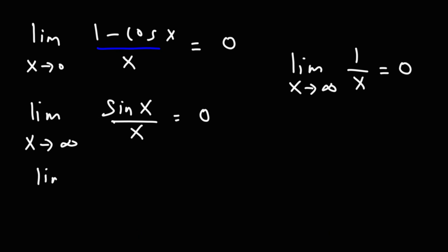Sine and cosine, they could vary between negative 1 and 1. So, it's like sine times 1 over x, which will end up being 0.